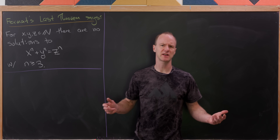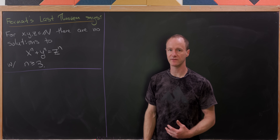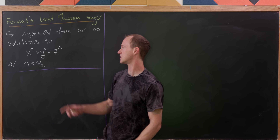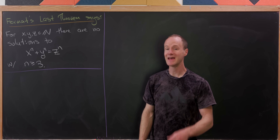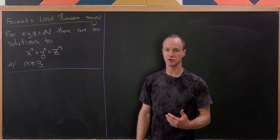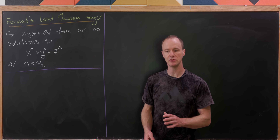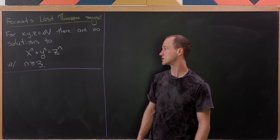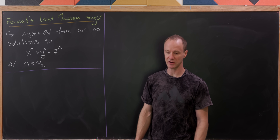Before we get started, let's recall what Fermat's Last Theorem says, which is: if we have natural numbers in an equation x to the n plus y to the n equals z to the n, where n is bigger than or equal to 3, that equation has no solutions. Of course, if n equals 1 there are infinitely many simple solutions, and if n equals 2 there are also infinitely many solutions — those are exactly the Pythagorean triples. But famously, there are no solutions if n is bigger than or equal to 3.